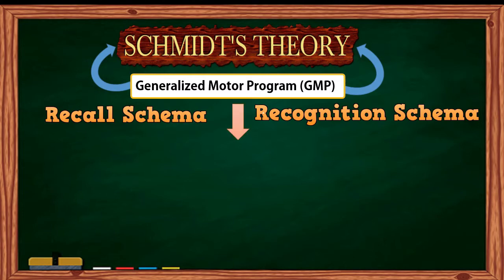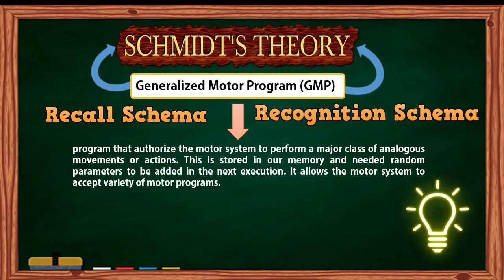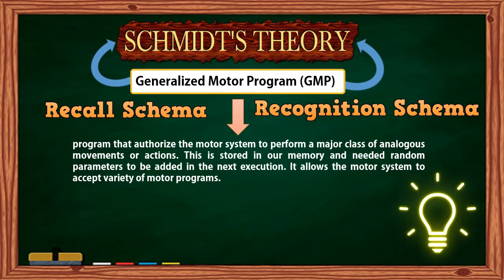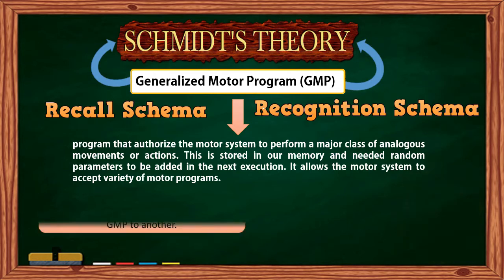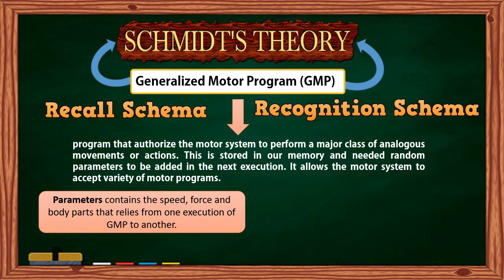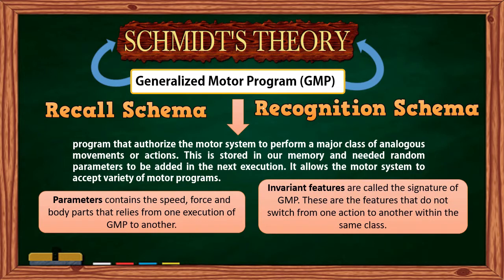A generalized motor program, or GMP, is a program that authorizes the motor system to perform a major class of analogous movements or actions. It is stored in our memory and requires random parameters to be added in each execution. It allows the motor system to accept a variety of motor programs. Parameters include speed, force, and body parts that vary from one execution of GMP to another. Invariant features, called the signature of GMP, are features that do not switch from one activity to another within the same class. The GMP theory focuses on ballistic and fast movements, where the absence of time limits the ability to use feedback.